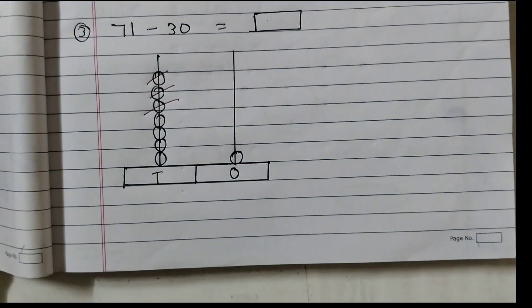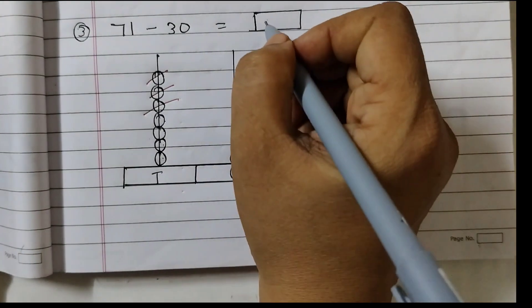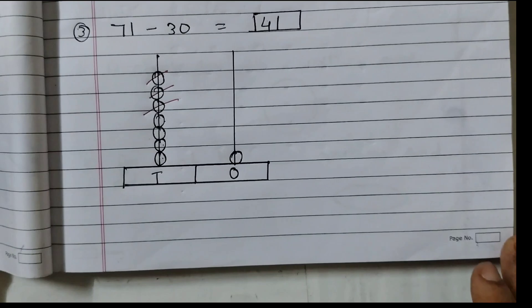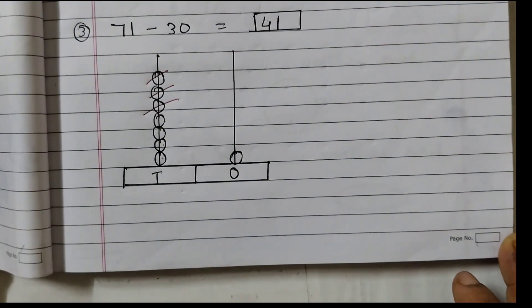Now we will write the answer. Now count the beads. 1, 2, 3, 4. And here 1. So the answer is 41. That's all for now. See you all in the next video.